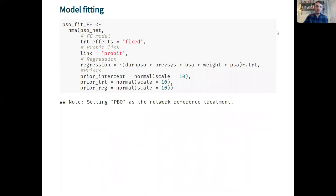I can go away and fit the model using the NMA function. Here I'm choosing to fit a fixed effects model with a probit link and then here I specify a regression model which includes main effects and interactions for each of the five covariates and then I'll specify normal priors on each of the model parameters.